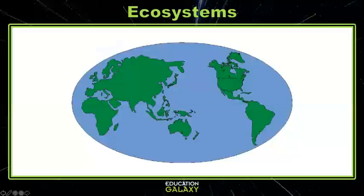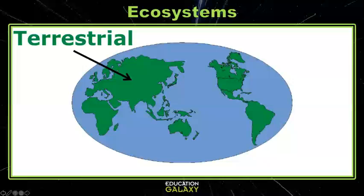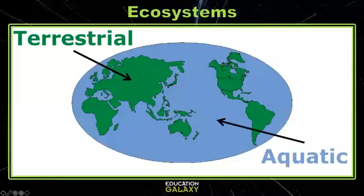The world is covered in different ecosystems, but they all fall into two main categories: terrestrial or land ecosystems, and aquatic or water ecosystems. There are six main terrestrial ecosystems that can be divided up by their climates. The two main factors of a climate that we look at are temperature and precipitation.